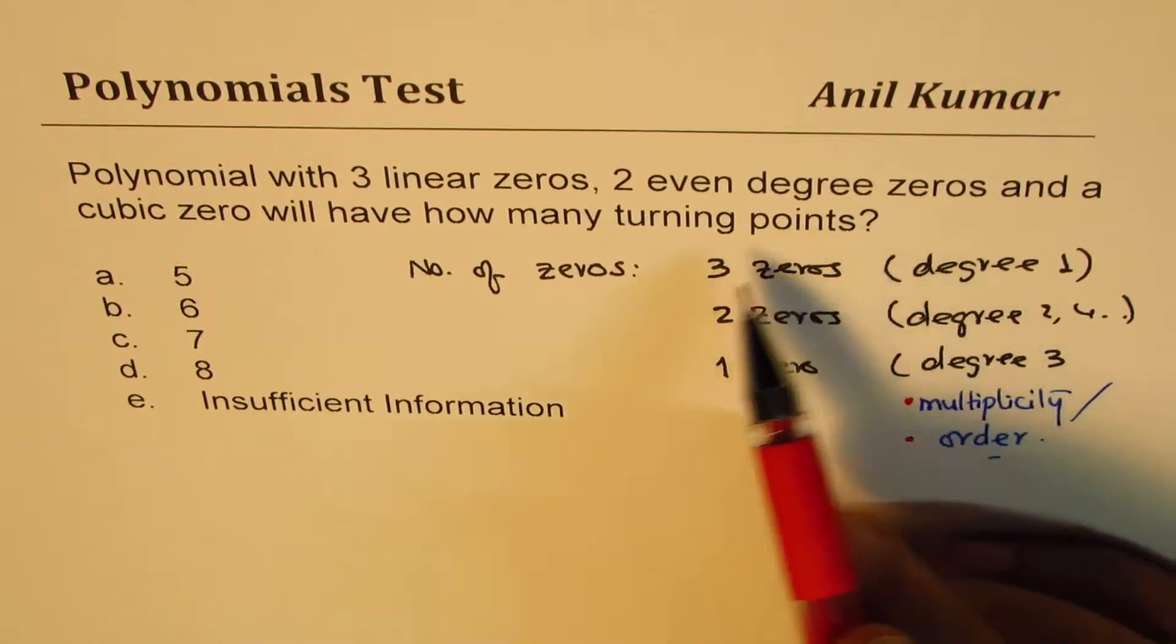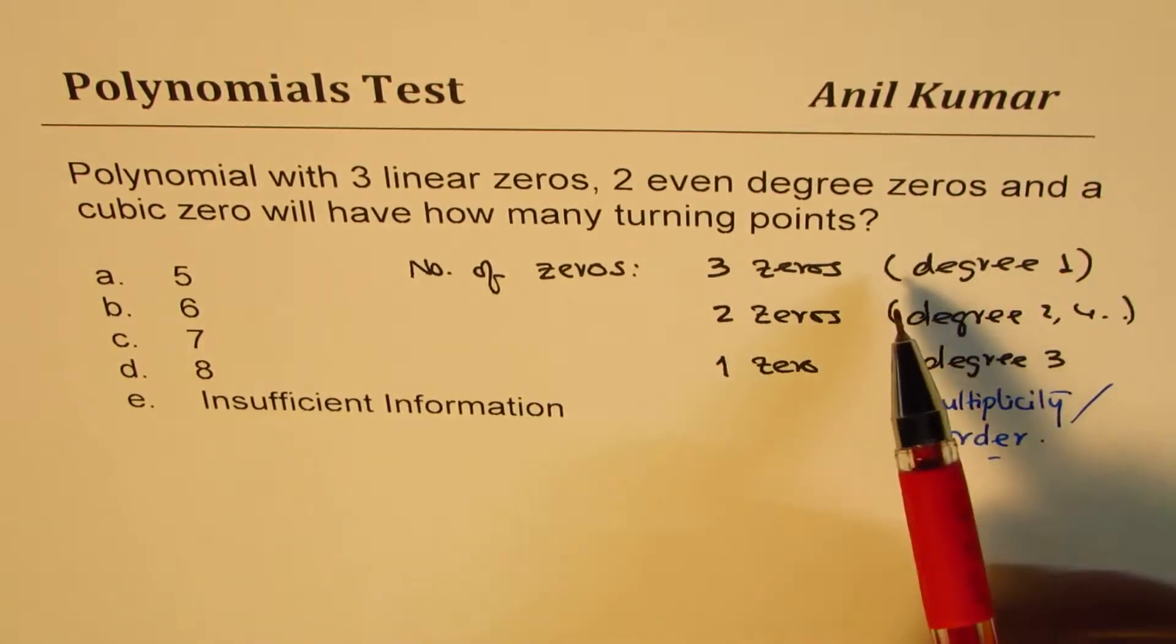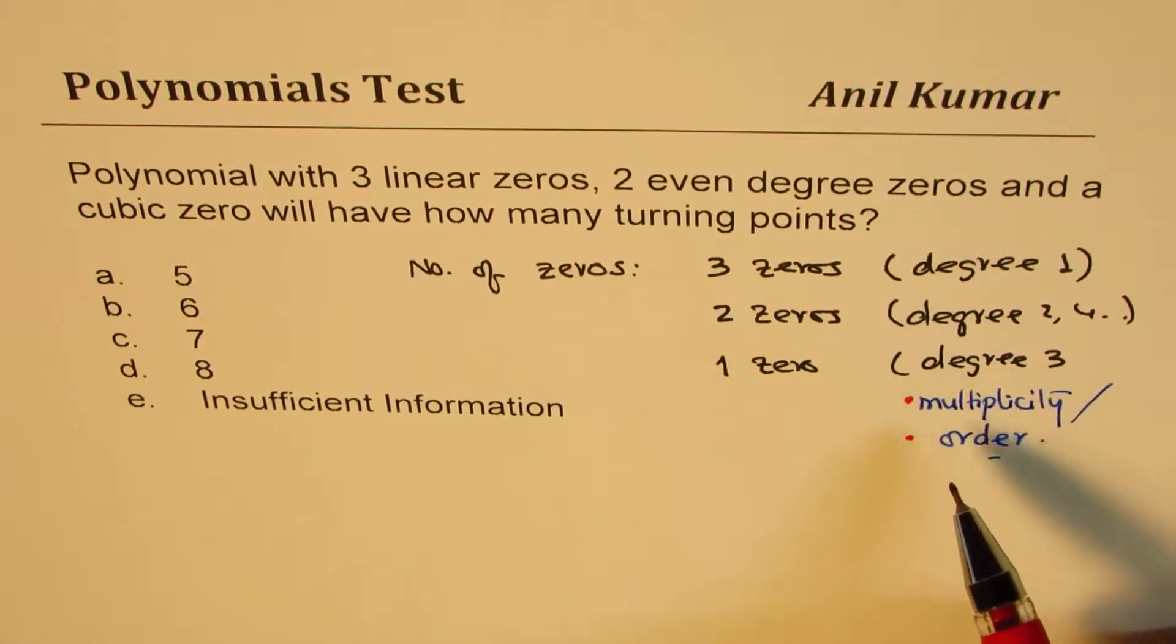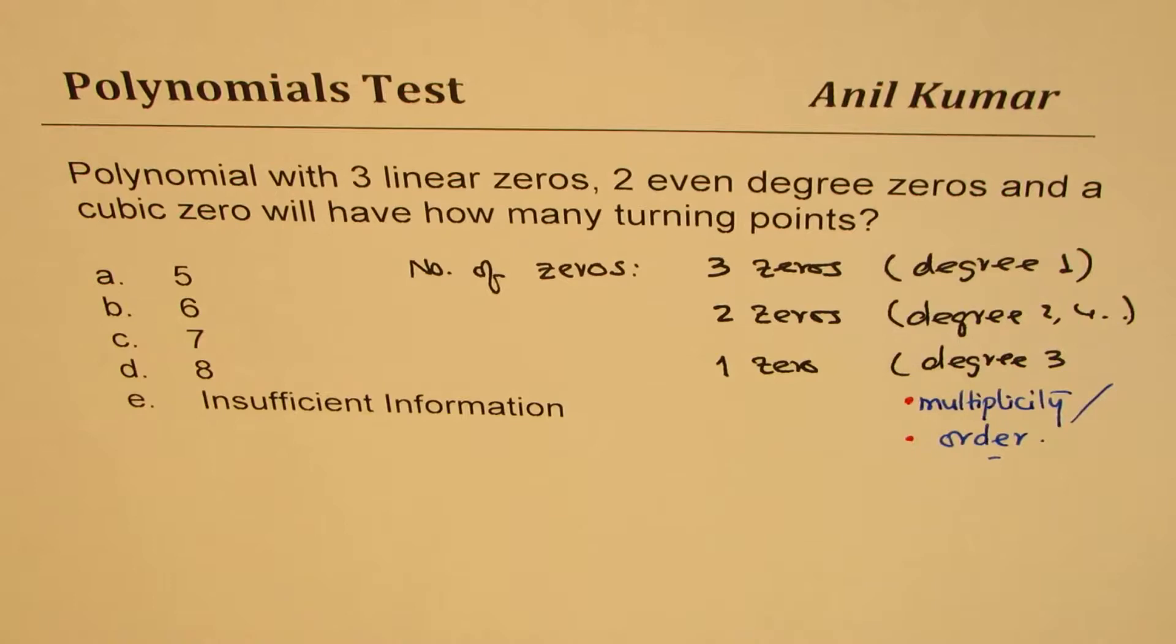So instead of degree we could use multiplicity or order. So that is given to you, you need to find how many turning points will this function have. Will it have five, six, seven, eight or is the information insufficient? I hope now the question is absolutely clear.